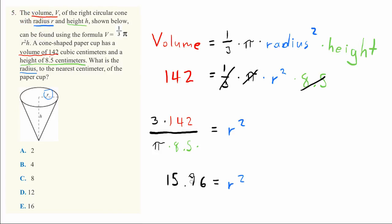So 3.99 equals R. After taking the square root of each side, that's about 4.